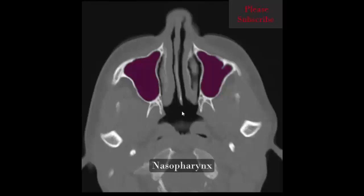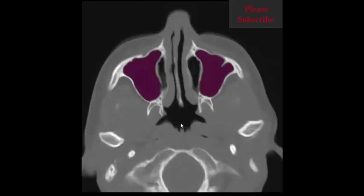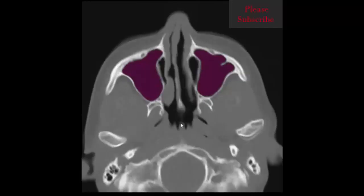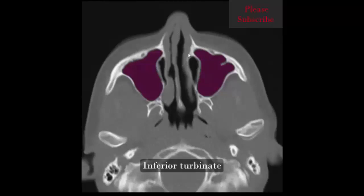Here we can see the nasopharynx and pterygoid plate. Also visible are the right and left maxillary sinus, nasal septum, nasal cavity, and right and left inferior turbinate.